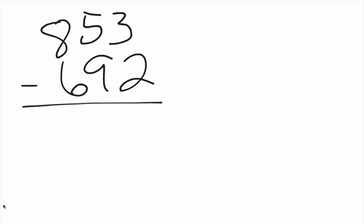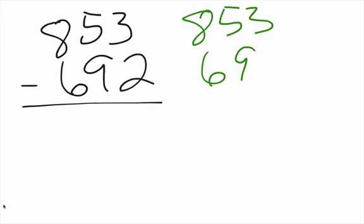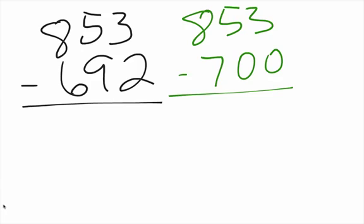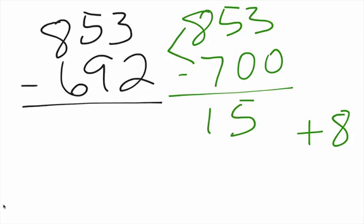On this one we have to borrow. So how do you do that with three-digit numbers? You're going to take 692 and round it up to the nearest multiple of 100, which will be 700. So we say 853 minus 700 — we have to go up 8 to get there. We're really dealing with just the first two numbers: 8 minus 7 is 1, and everything else comes on down. Now 153 plus 8 will give us 161.